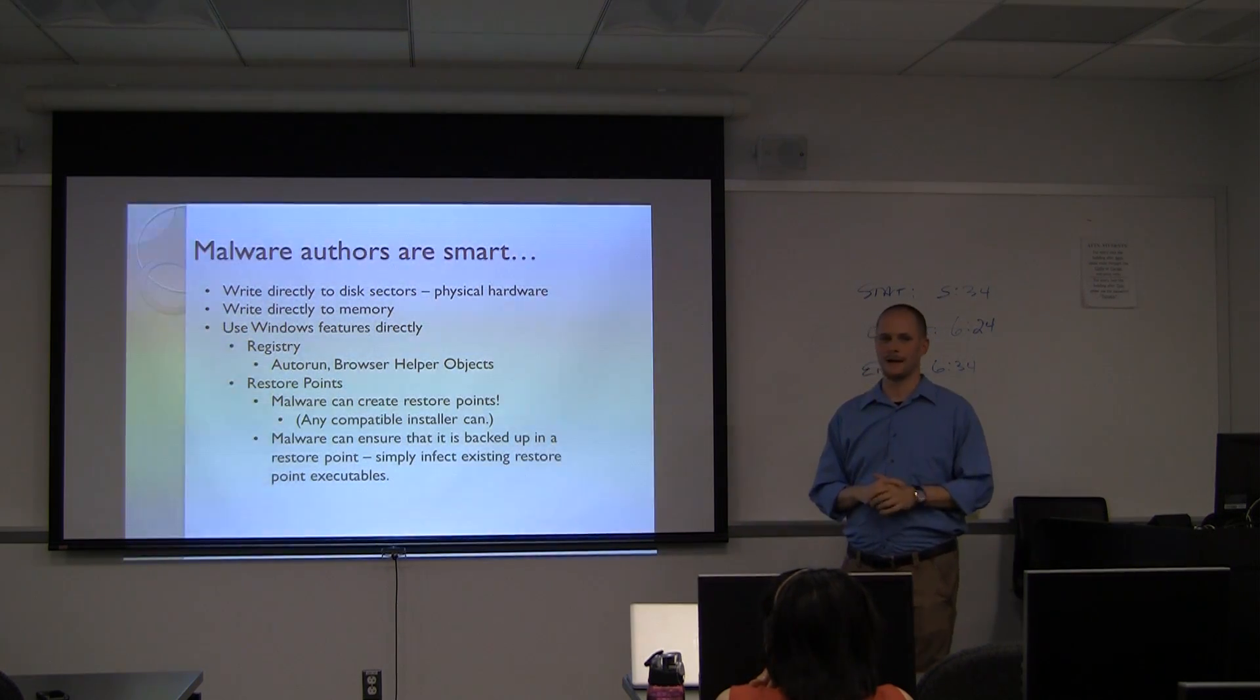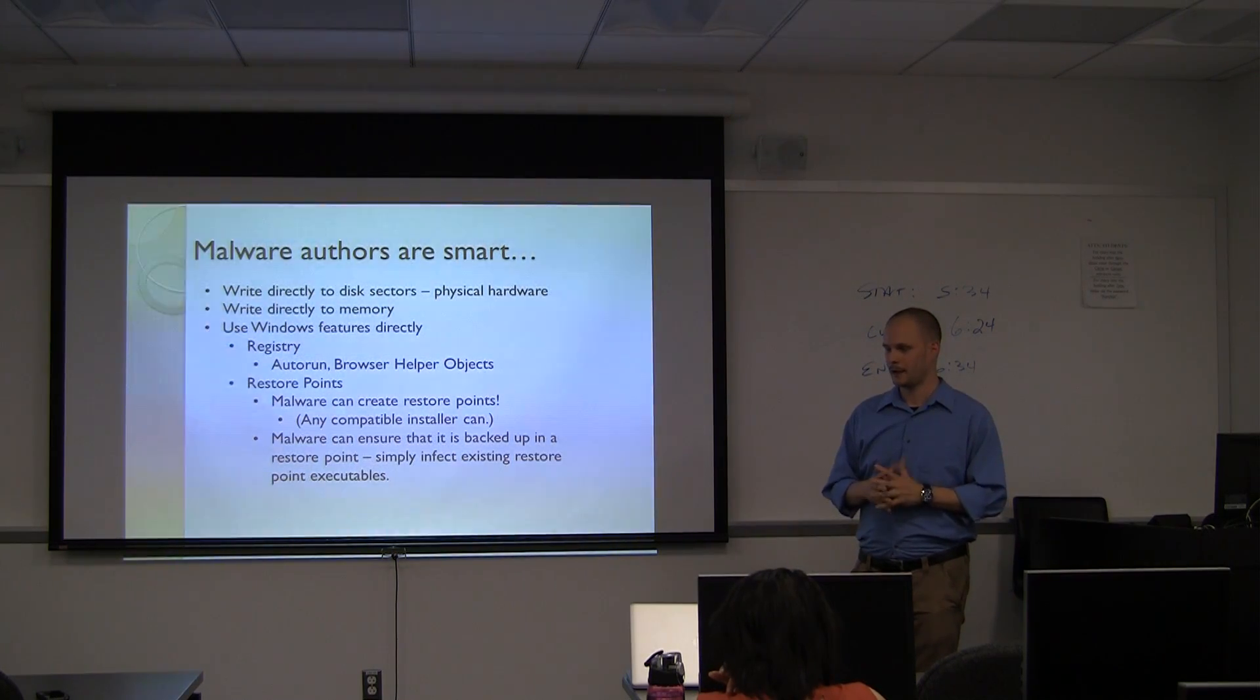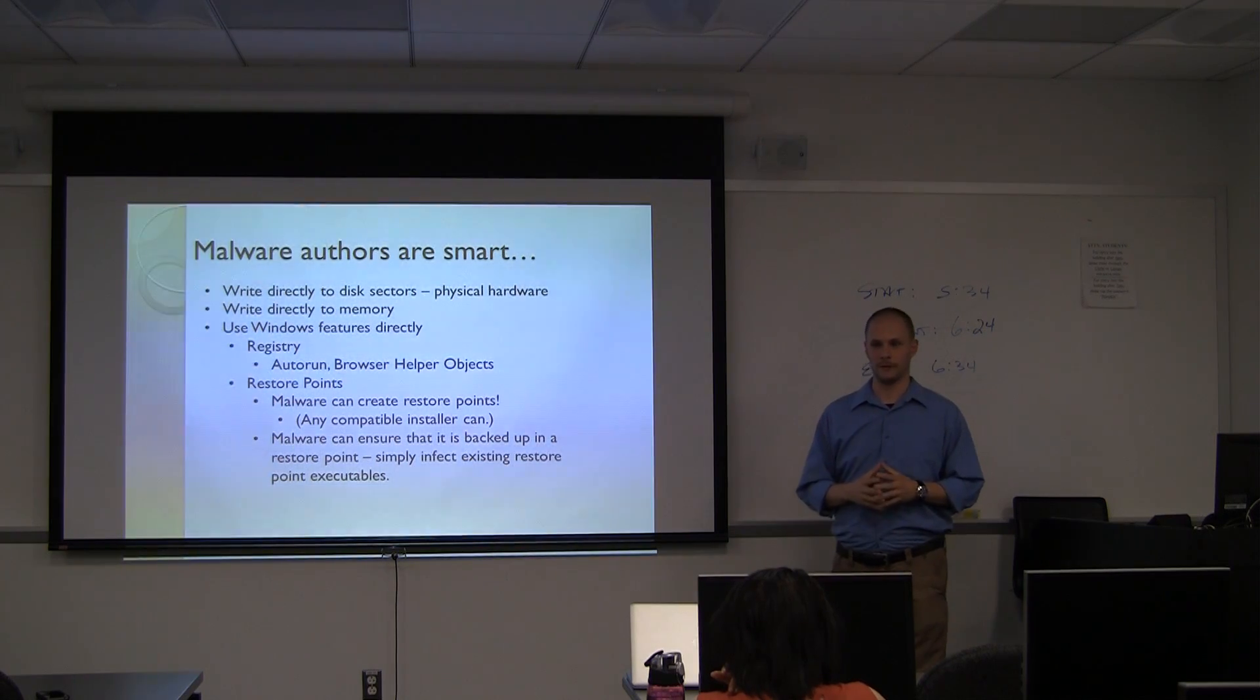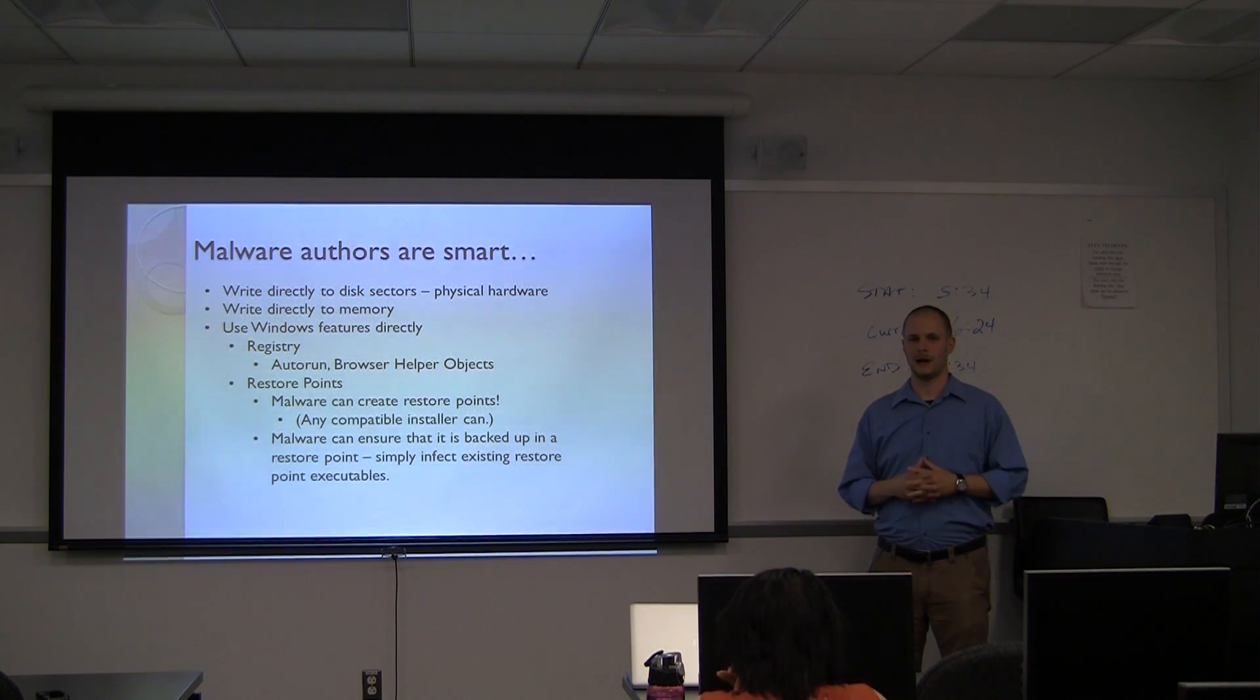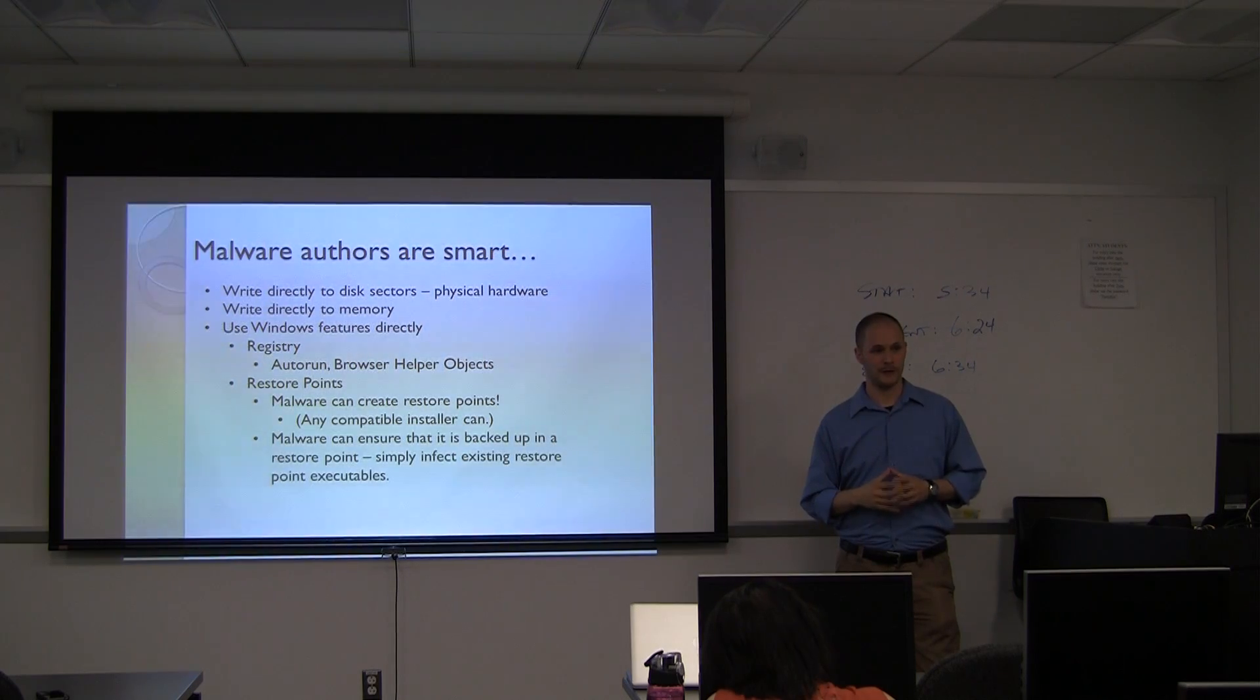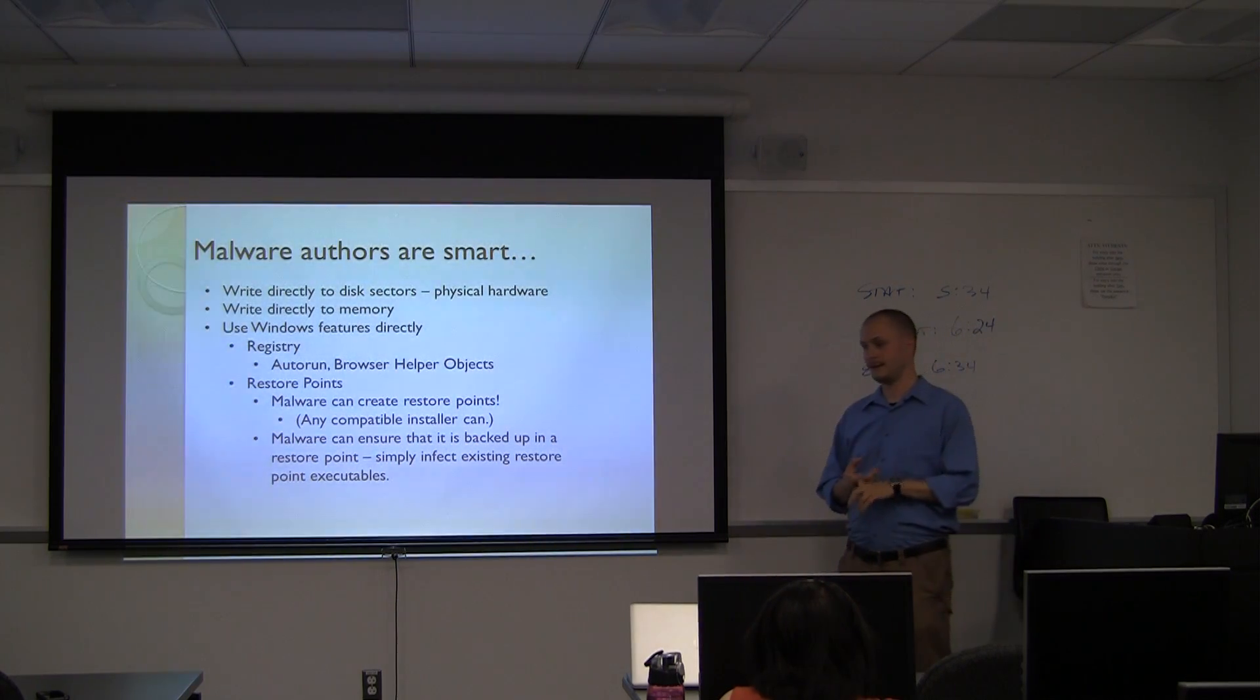They will write directly to memory. Anybody here heard of SpyEye, which is a banking trojan? SpyEye is a banking trojan that is designed to do one thing, and that is to steal money. It's quite effective, actually. A lot of people cost a lot of money because of this malware. It has a more popular cousin called Zeus, which does pretty much the same thing. But what SpyEye does is once it's actually on the machine, it will write an encrypted configuration file into memory, and then read the contents out of that encrypted configuration file also in memory. So, the real trick with that software is that you have to be able to get that particular file out of the memory. It's not an easy task.